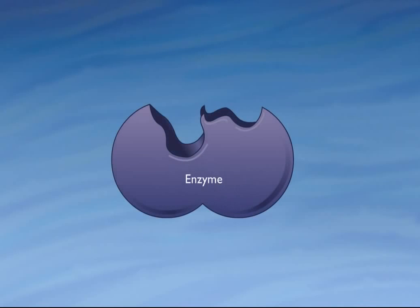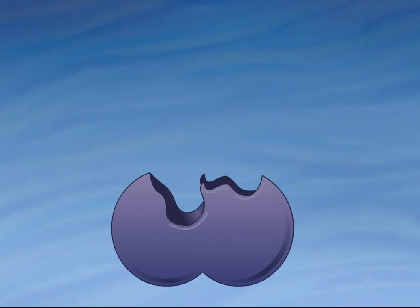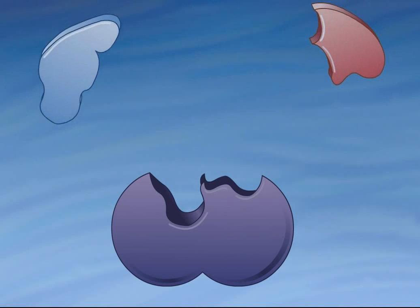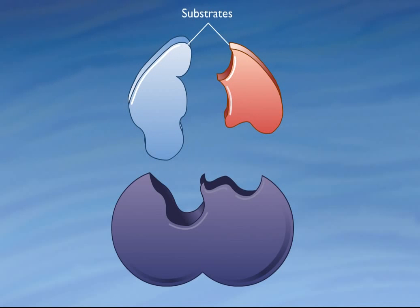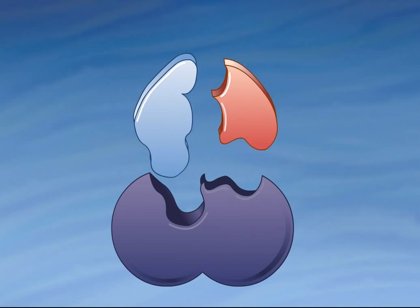Enzymes are proteins that speed up chemical reactions in the cell. A special region on the enzyme, called the active site, has a shape that fits with specific substrate molecules. An enzyme works by binding to one or more specific molecules called reactants or substrates. Binding occurs at the active site.